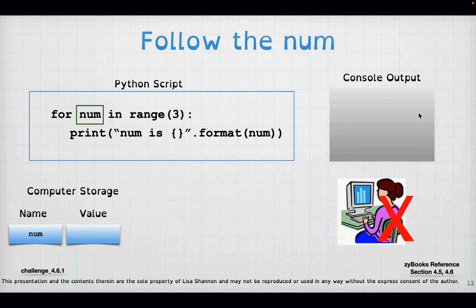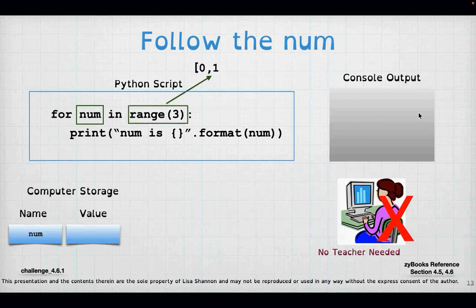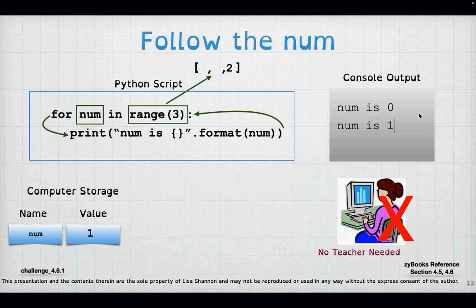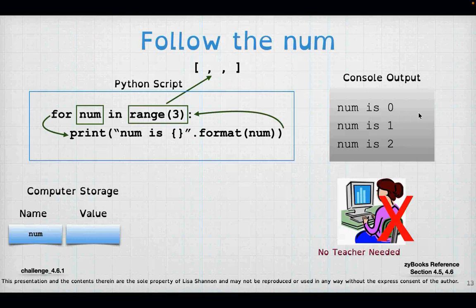Let's follow the number. I have 'for num in range(3)', so I know I'm going to have numbers 0, 1, and 2. Python hits range and creates a list: 0, 1, 2. It assigns num starting at 0 and prints 0. Then it goes back up to the top of the loop, changes num to 1 — it does this automatically, I don't have to increment. Then it takes 2, makes num equal to 2. When the collection is empty, I'm done. That's how a for loop works — it pulls each one out of the range until there's nothing left.